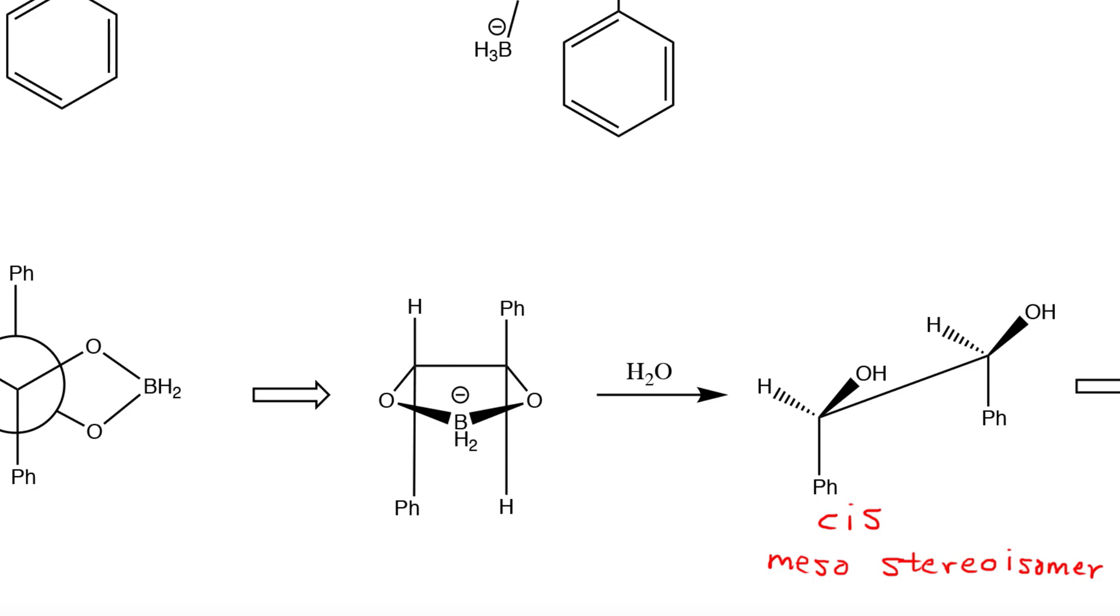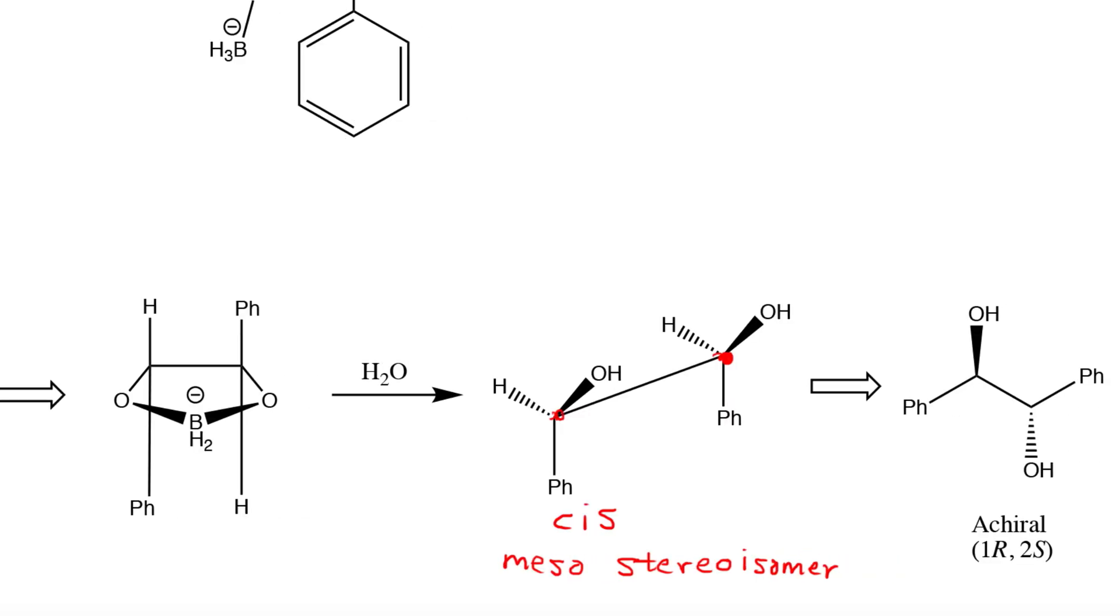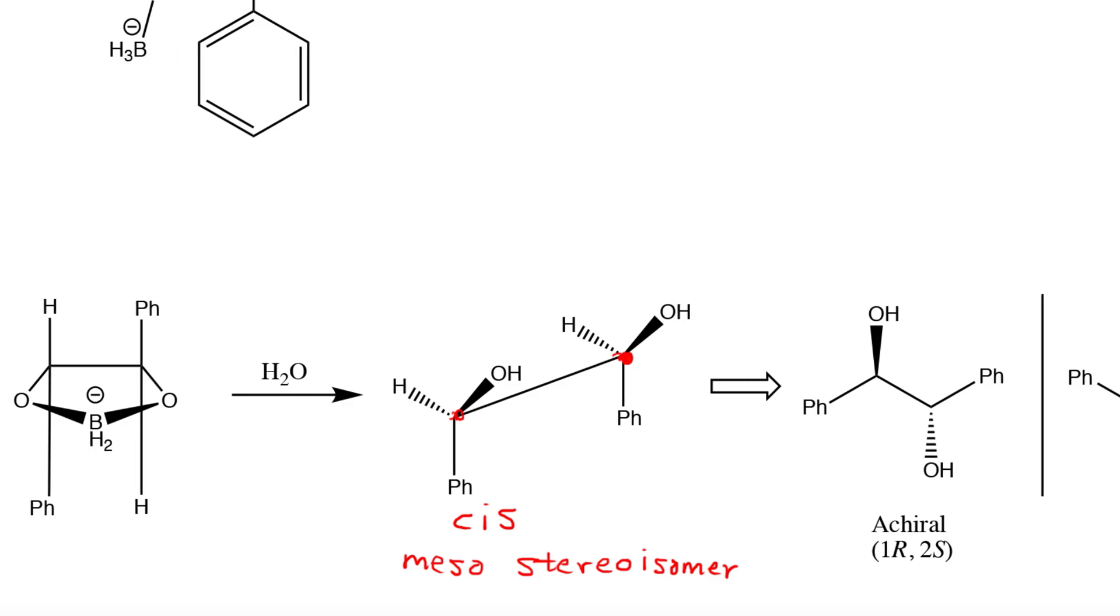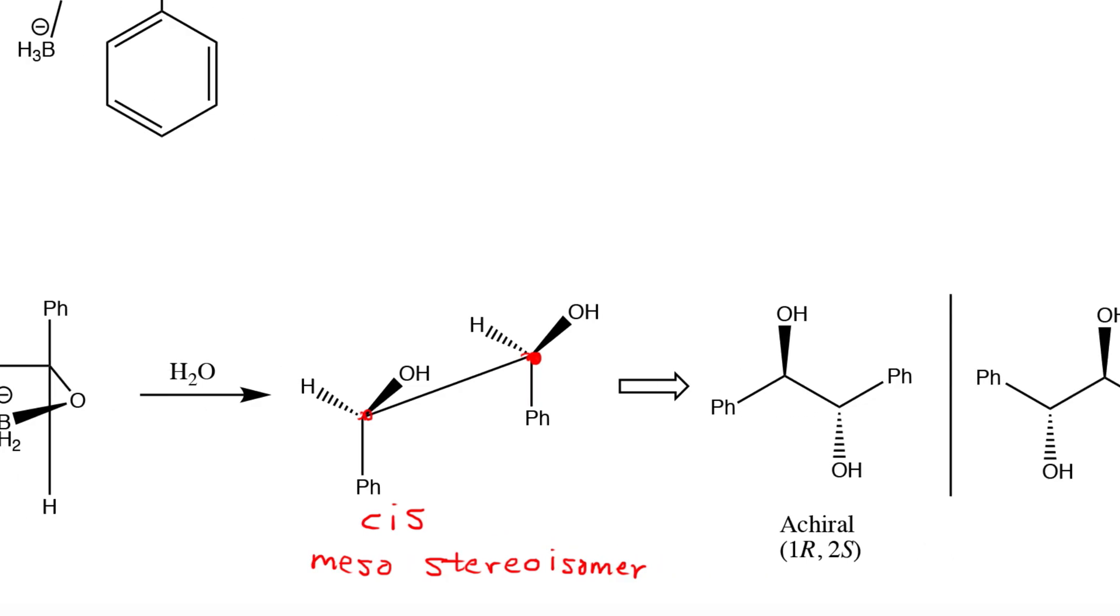Now the meso stereoisomer is a special type of stereoisomer where the molecule can have two or more chirality centers, but its mirror image is actually superimposable with itself. So if we convert this projection into our typical bond line structure,